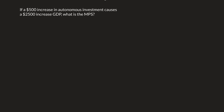But let's talk about what we do know. There are a few things we know. The change in GDP divided by any change in autonomous spending is going to equal our multiplier.